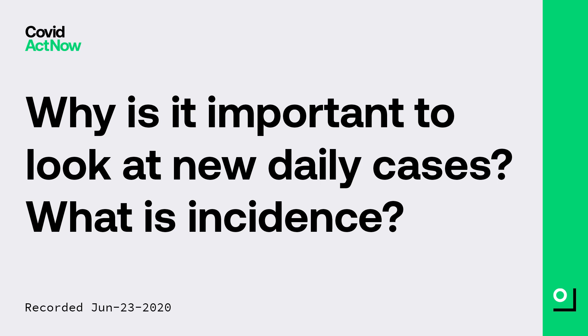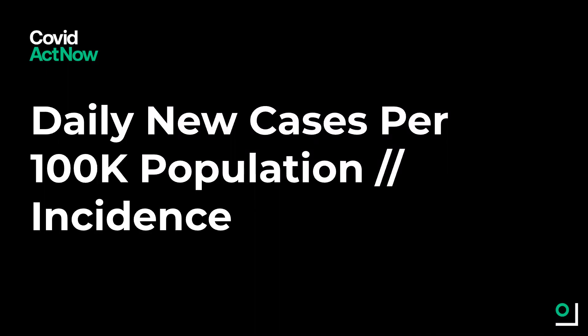Today, we're looking at incidence, or the number of new daily cases per 100,000 people in a population. This metric rounds out our warning system by incorporating a measure of how much COVID there is in a given community on a given day.